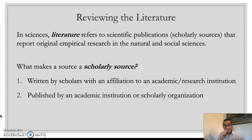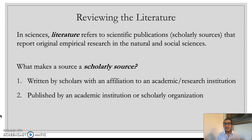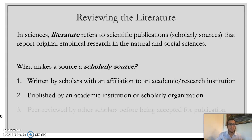Second, it's published by an academic institution or scholarly organization. Academic journals — little books or magazines of sorts — are published by scholarly organizations that report research studies. Social scientists write a paper or report, it gets reviewed, and it gets published in one of these academic journals.